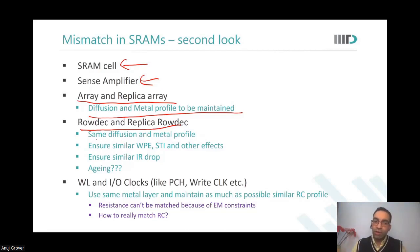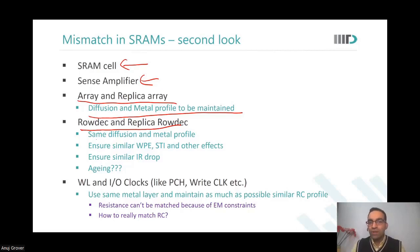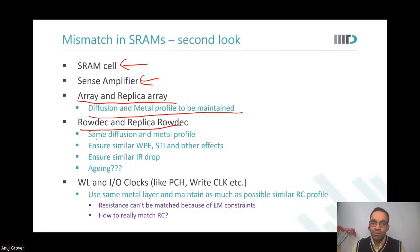Between wordline and IO clocks or SAEN, they have to all run in the same metal layer. I remember seeing a failure in a big memory where two clock signals — one was running in metal one, the other was running in metal three when production started. We observed that many lots were failing because of memory, and then we realized the clock signals were running in different metal layers.